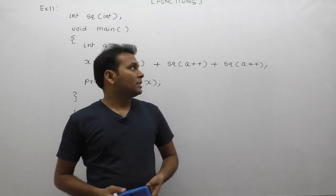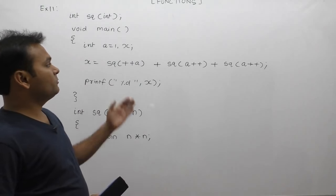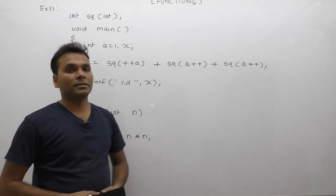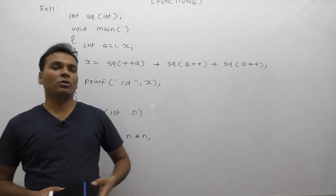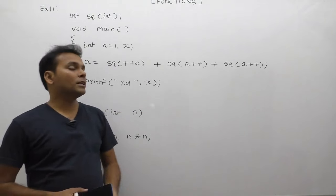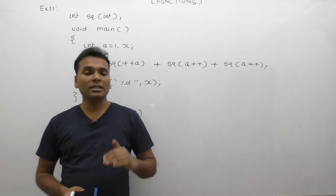Next, what is the output of this example program? In this case, we are calling function sq within arithmetic expressions. What is the behavior of this function calling statement? Because we are calling the sq function more than one time within a single expression, what is the behavior of this expression?